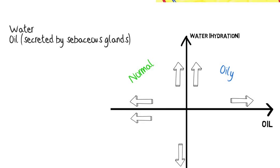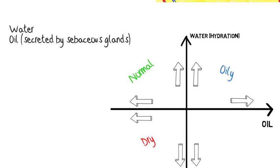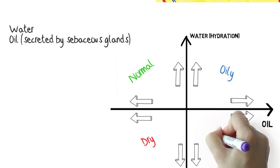If both the water and oil content is low, your skin will be most probably dry. If your skin is dehydrated and oil content is high, your skin is dry oily.